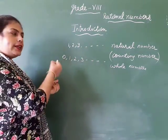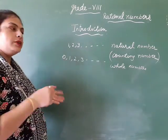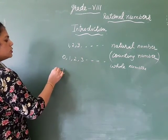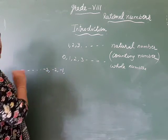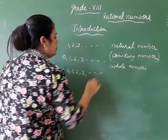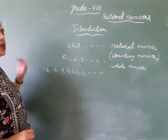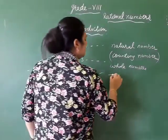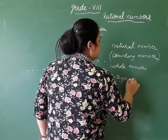Next, if we add negative numbers — minus 1, minus 2, minus 3 — negative numbers are not natural numbers. When positive numbers, negative numbers, and zero are combined, they become integers.